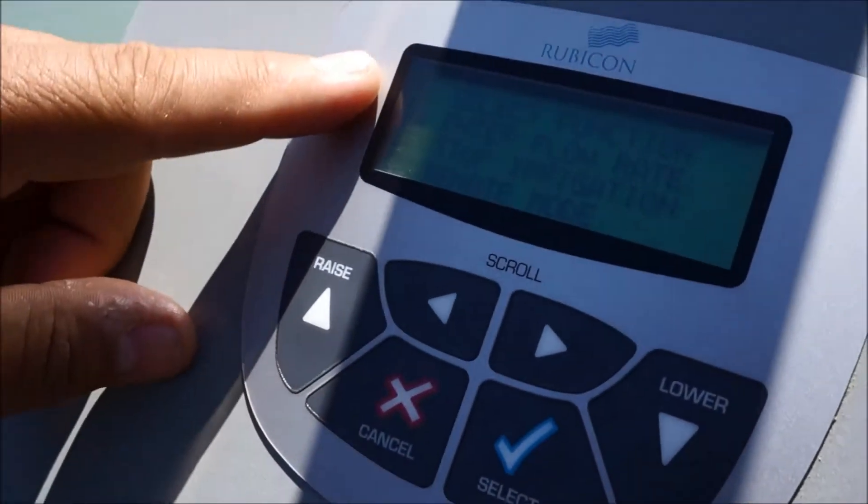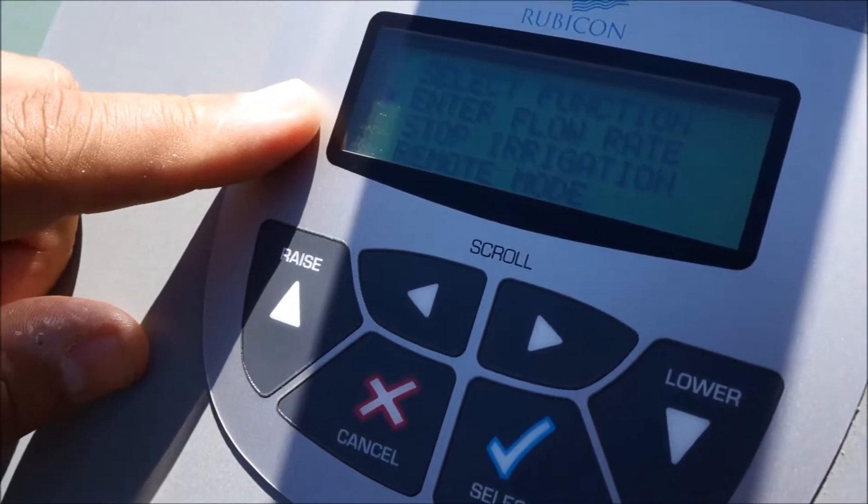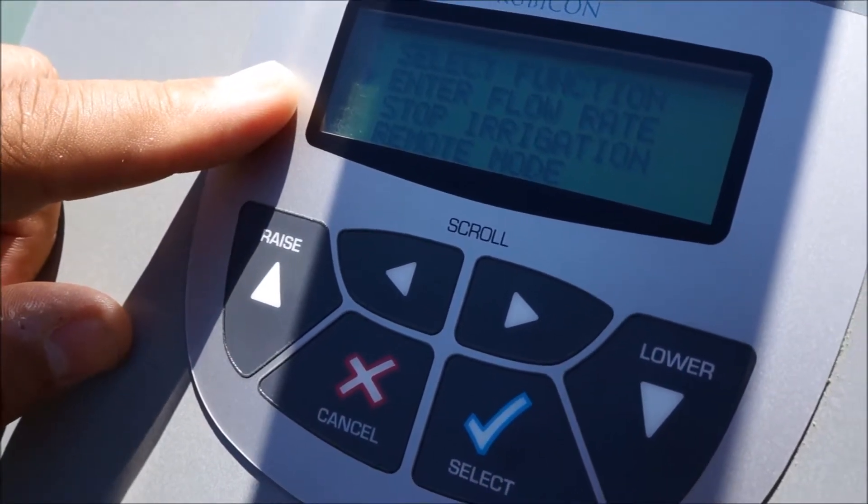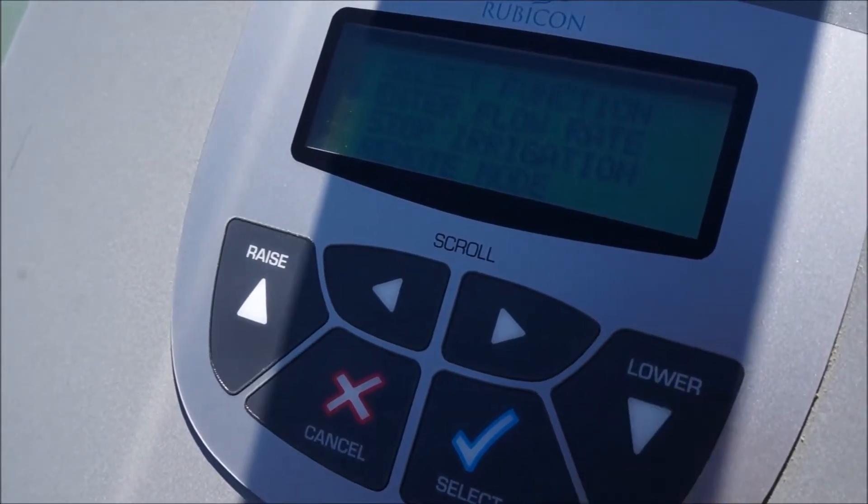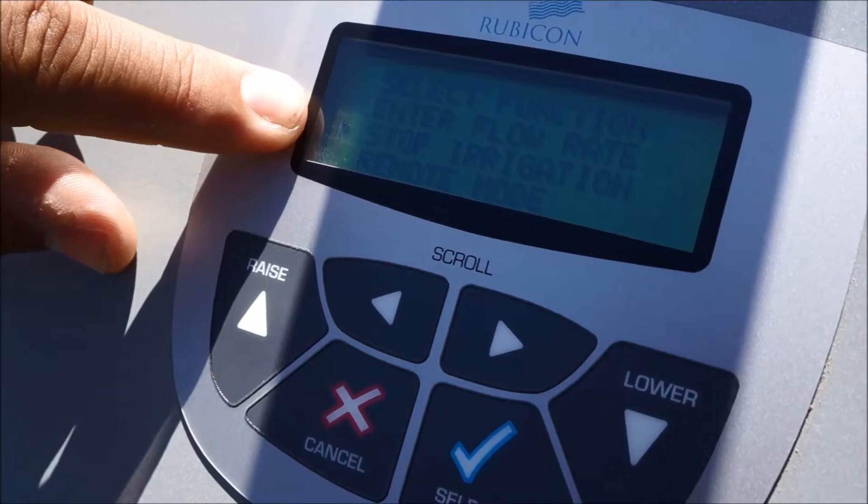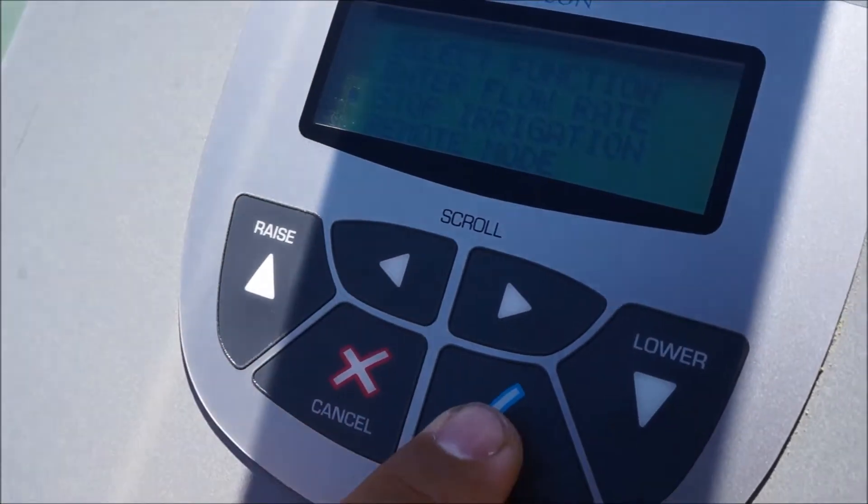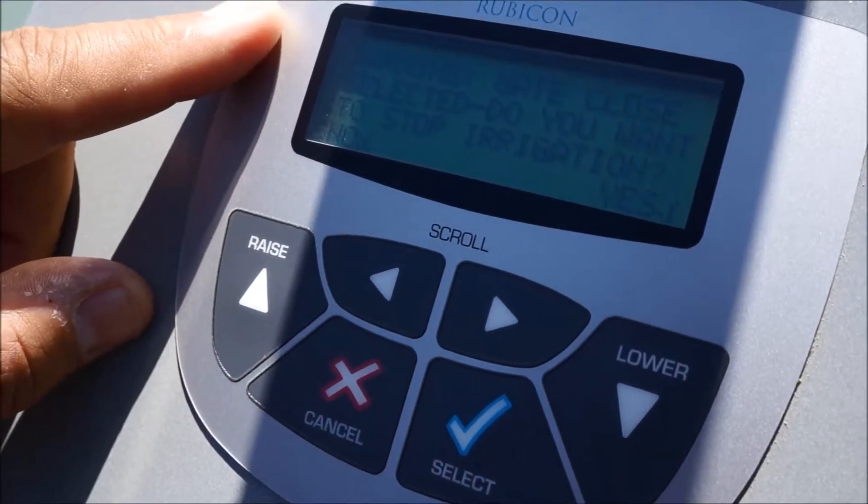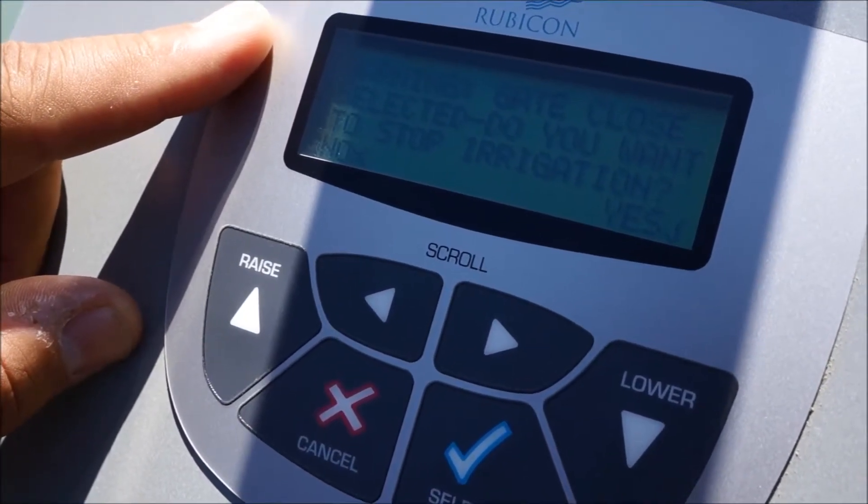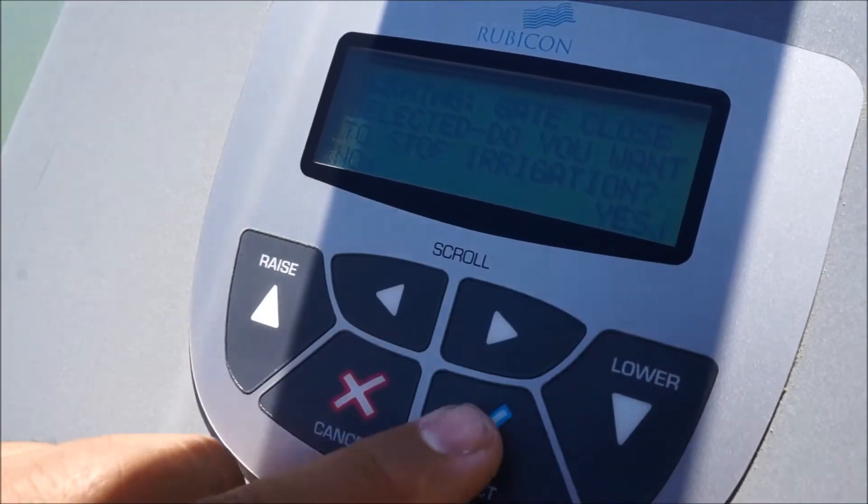Now you have three different selections. The selection to stop irrigation, you hit the lower button once. You'll see the arrow indicating stop irrigation. Hit the select button to select and it's going to ask you a question: warning, gate close selected, do you want to stop irrigation? Yes, we do want to stop irrigation.